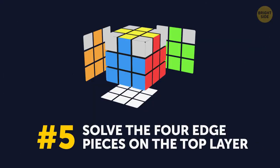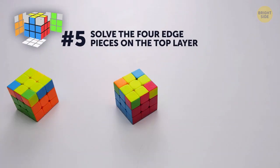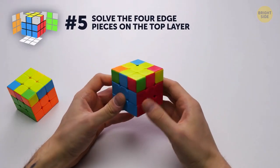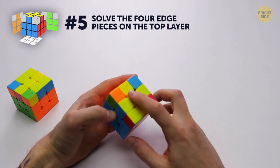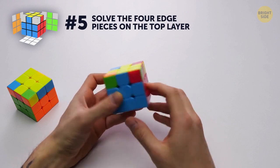Number 5. Solve the four edge pieces on the top layer. Now, we need to arrange the edges of the yellow cross so that the second color coincides with the color of that side.